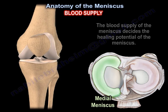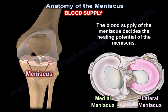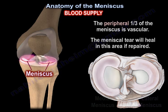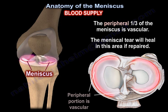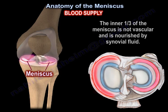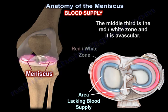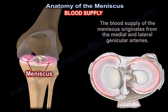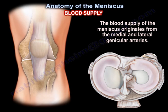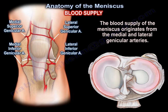Regarding blood supply: the blood supply of the meniscus determines its healing potential. The peripheral third of the meniscus is vascular, and a meniscal tear will heal in this area if repaired. The inner third is avascular and is nourished by synovial fluid. The middle third is the red-white zone and is also avascular. The blood supply originates from the medial and lateral genicular arteries.